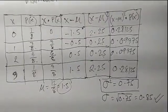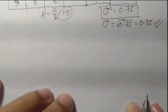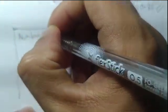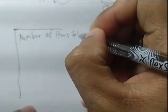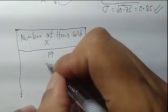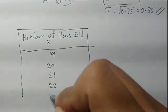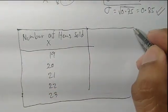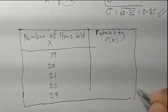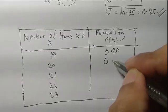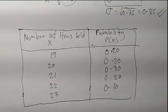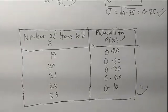That's all for today. For practice, here's an activity: suppose the number of items sold is represented as random variable x, with values 19, 20, 21, 22, and 23, and corresponding probabilities 0.20, 0.20, 0.30, 0.20, and 0.10. Comment your answer below. Thank you for watching.